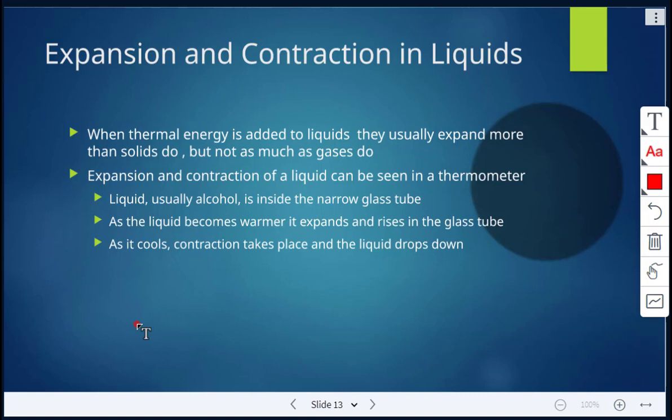We can see this, for example, in a thermometer. The liquid, which is usually alcohol, it used to be mercury, but now it's mostly alcohol that's used. That liquid is inside the narrow glass tube. As the liquid becomes warmer, it expands and rises in the glass tube. And as it cools, contraction takes place and the liquid drops down. That's an example in thermometers.